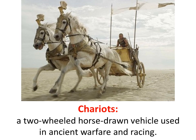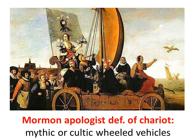Chariots are mentioned several times in the Book of Mormon, but there were no chariots during Book of Mormon times. The common definition is a two-wheeled, horse-drawn vehicle used in ancient warfare and racing. But since there were no chariots in Book of Mormon times, Mormon apologists redefined the word 'chariot' and call it a mythic or cultic-wheeled vehicle. I really couldn't find a picture of what they're talking about, but the picture above seems to apply here.